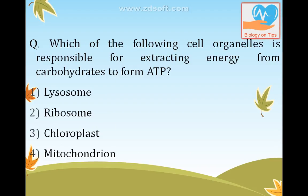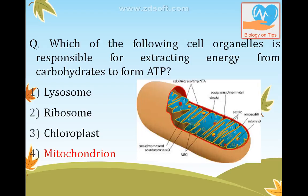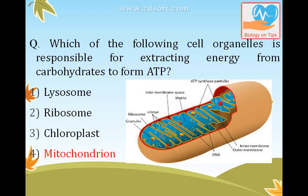Which cell organelle is responsible for extracting energy from carbohydrates to form ATP? The answer is mitochondria — called the powerhouse of the cell. It is a double membrane-bound cell organelle that contains its own RNA, double-stranded DNA, and 70S ribosomes. That is why it is also called a semi-autonomous cell organelle, or cell within a cell.